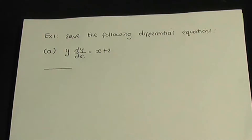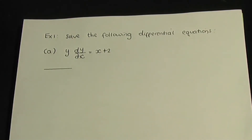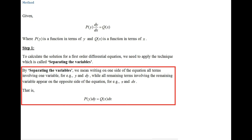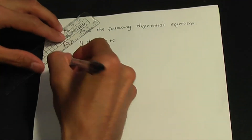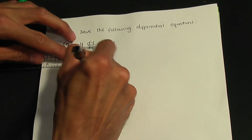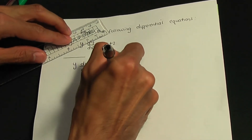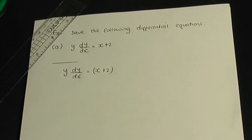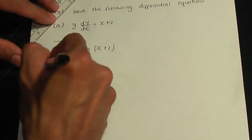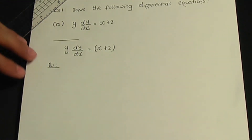Let's try this method out with example one: solve the following differential equation. In part a, we have y dy/dx = (x + 2). Step one is to write all y and dy terms on one side and x and dx terms on the opposite side. We have y dy/dx = (x + 2).